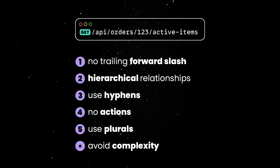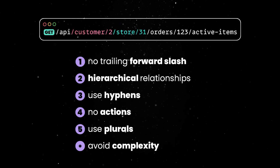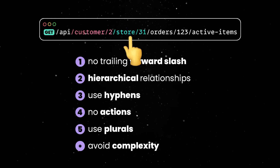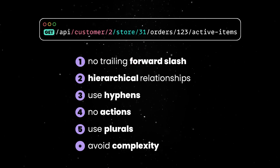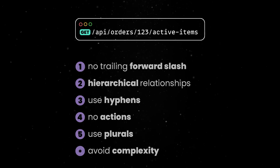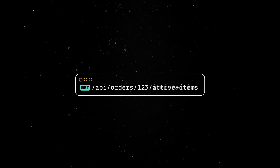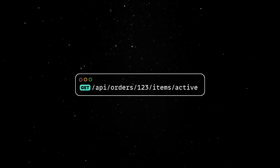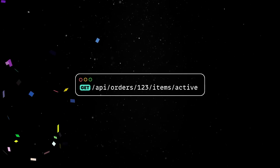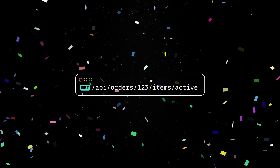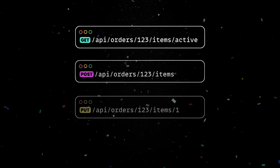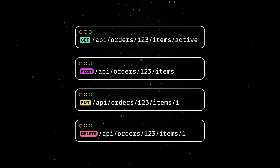As a bonus, avoid complex endpoints — try not to use hierarchical structures with more than two levels. The order could be linked to a customer, and that customer to a store, but there is no need to outline this entire relationship at the API level. The endpoint would look better with the active status nested under items. Following this principle, we can add endpoints for various other operations and relationships.